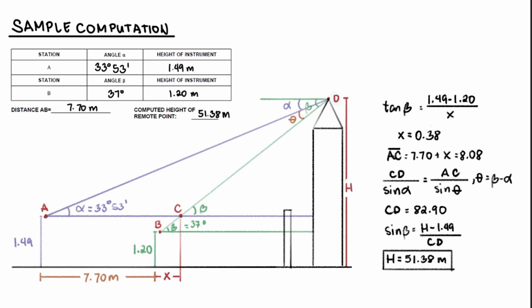Next, from this, we can get the distance from A to C. And that is just the distance A to B, which is 7.70, plus distance x. Doing this, we get 8.08 meters.